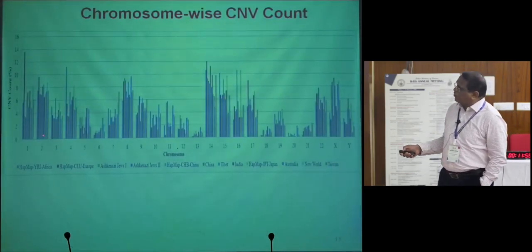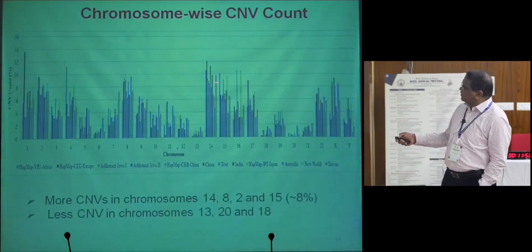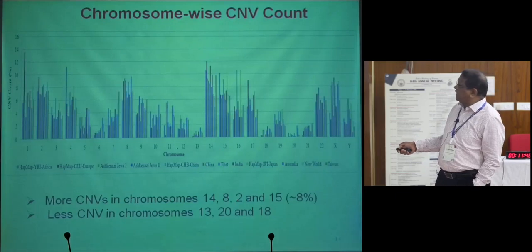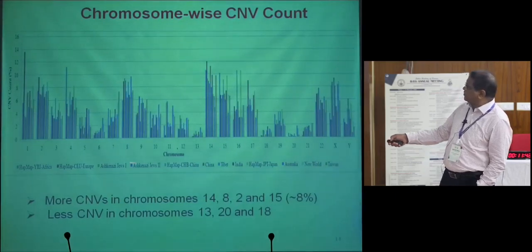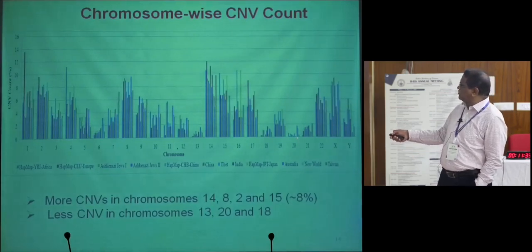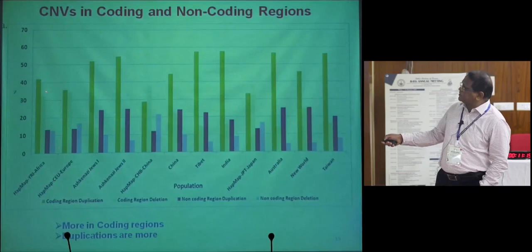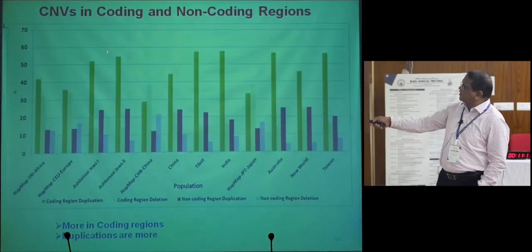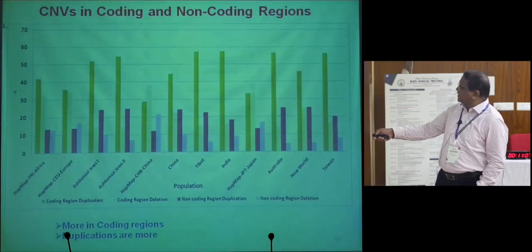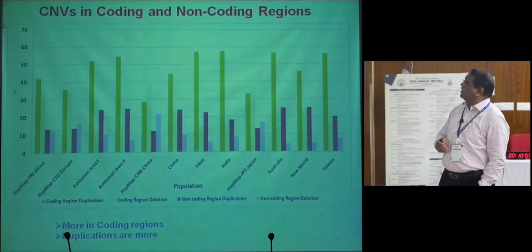The genome map on chromosomes was generated using these tools. To summarize, chromosome 14, chromosome 8, chromosome 2, and chromosome 15 harbor about 8 percent of the copy number variation. Less copy number variation was seen in chromosomes 13, 20, and 18. CNVs are more in the coding sequences rather than the non-coding sequences. The green shows more duplications and deletions in coding sequences compared to non-coding sequences, which are shown in the red and lighter colors.